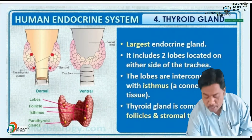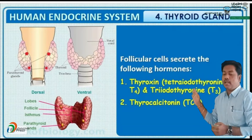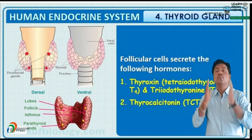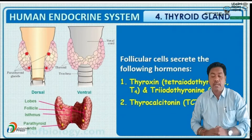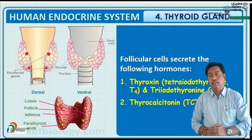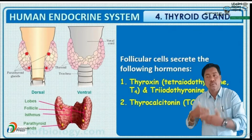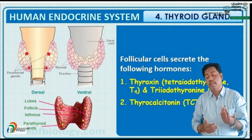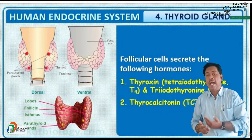The follicular cells are the specialized cells of the thyroid gland. These cells play a major role in synthesizing two kinds of hormones. The first hormone is T3 and the second hormone is T4. T3 is triiodothyronine and T4 is tetraiodothyronine. Iodine is a specialized molecule that helps in the production of thyroxine hormone.